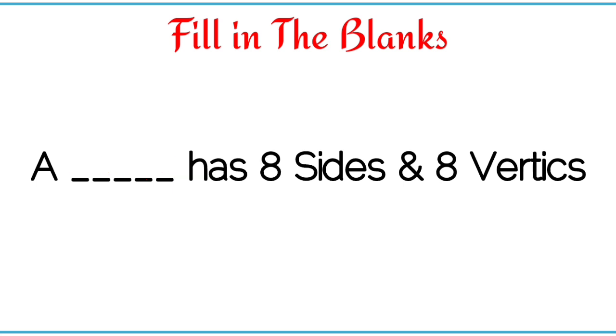A dash has eight sides and eight vertices. A hexagon has eight sides and eight vertices.